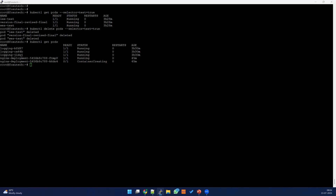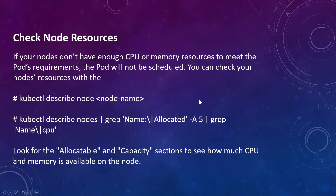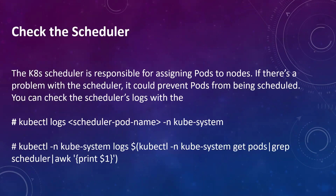This is how you can troubleshoot insufficient resource issues. If you can't delete any pods, you have to go for increasing the node size or adding new nodes. Now let's understand — what if there is an issue with the scheduler? You can run kubectl logs on the kube-scheduler pod in the kube-system namespace and read the log file to understand what's happening. That should help you troubleshoot whatever scheduler issue you are facing.